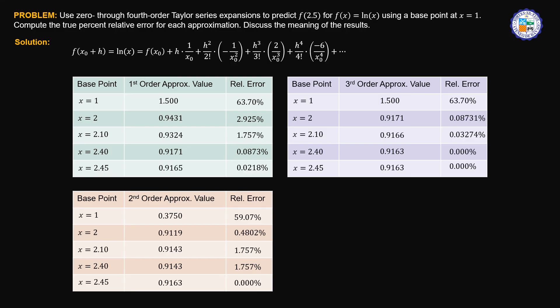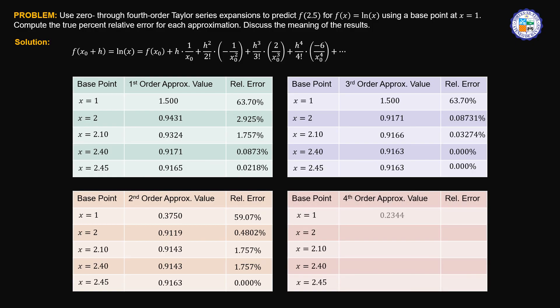For the third order approximation, at x equals 2, the relative error is already very low. At x equals 2.10, we reach an even lower relative error, and at x equals 2.40 it approaches zero. For the fourth order approximation, similar improved results are obtained, and the approximated values continue to improve.